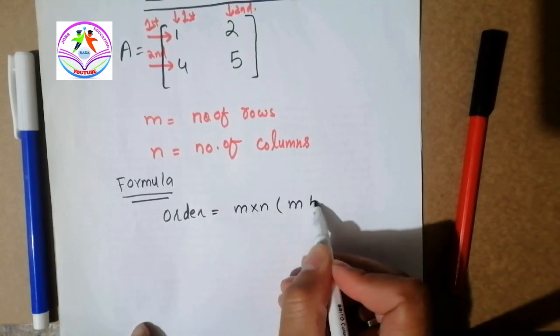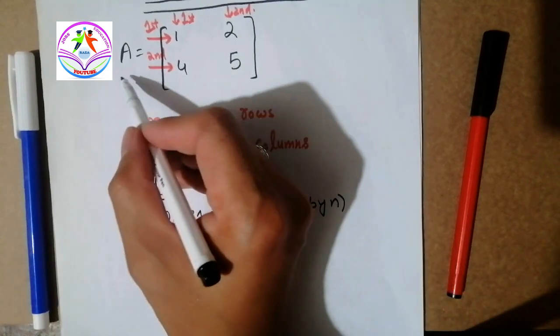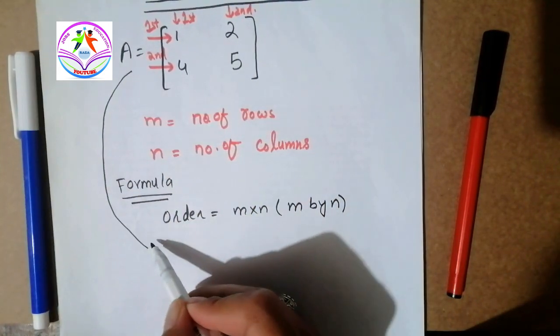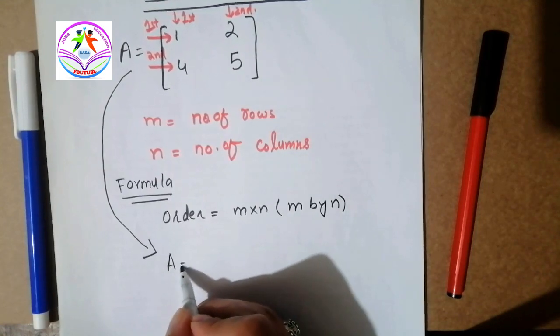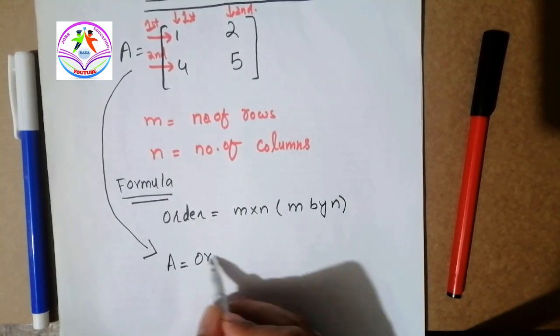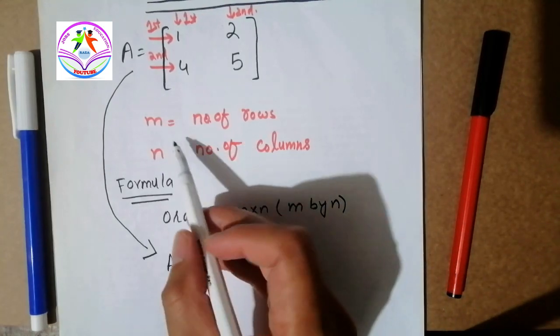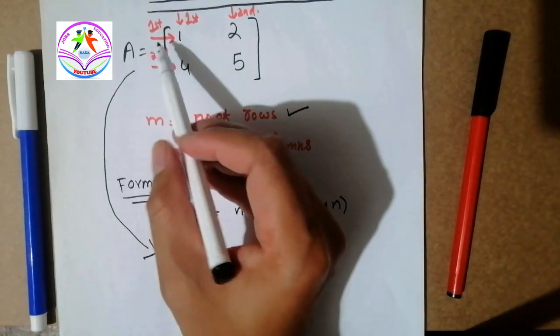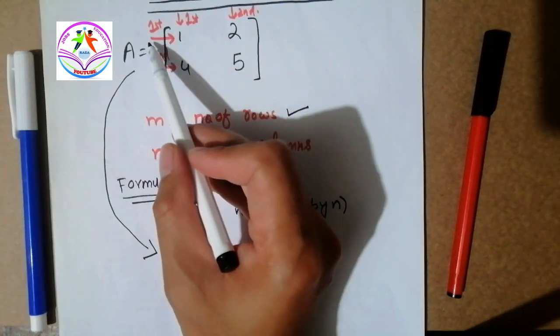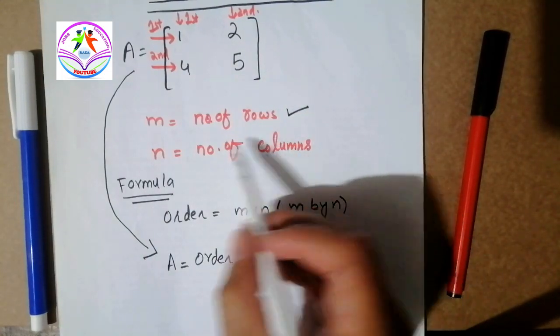So let's solve an example of A. We can say that A is equal to, order is equal to, m is equal to number of rows. So we can check that, first row and second row, so we can write that two rows.